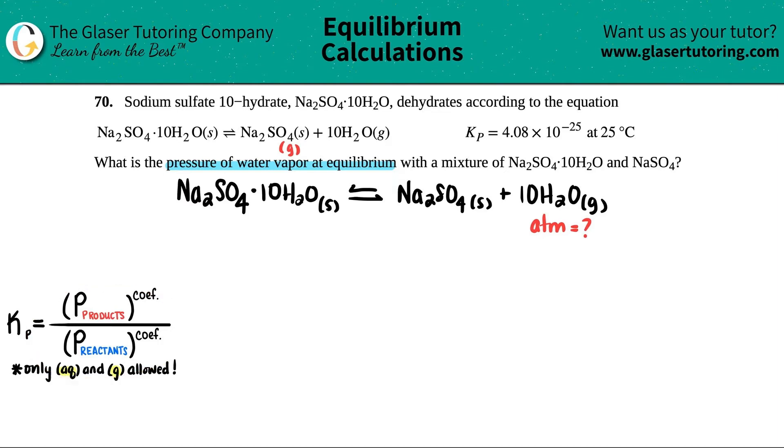Remember that only aqueous and gases are allowed in your formula, so always go for those states first. I have a solid, another solid, and then a gas. Only aqueous and gases are allowed. This whole hydrate is a solid, so it won't be able to go in our Kp expression. Get rid of it.